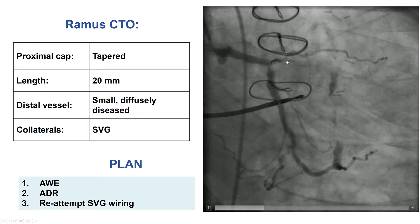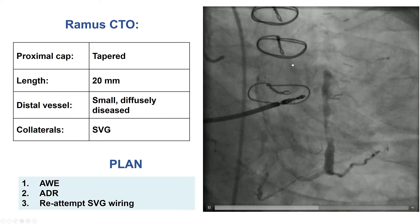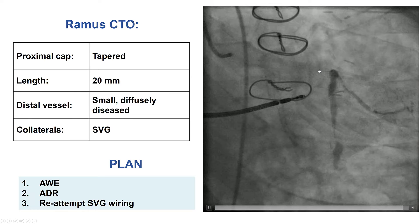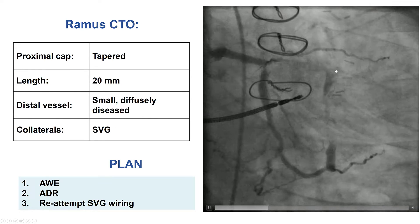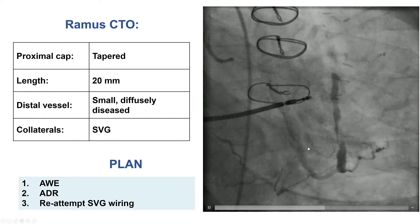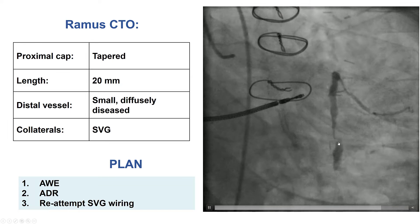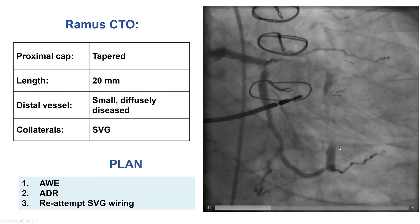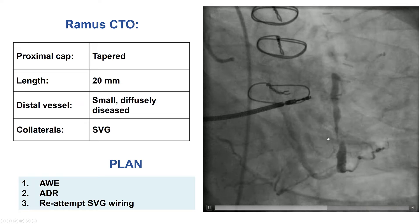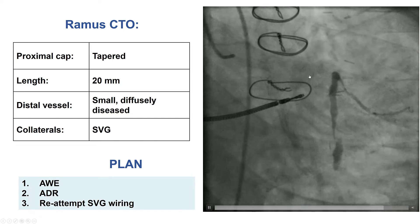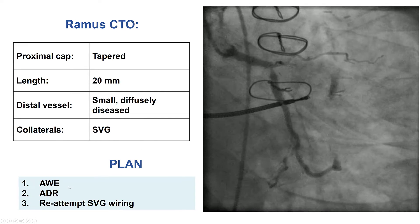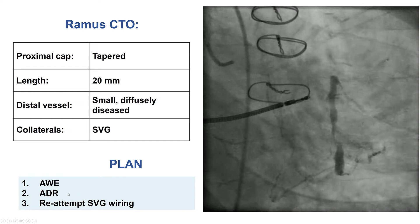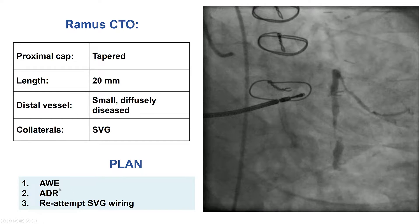This is a favorable CTO — it has a tapered proximal cap, the length is approximately 20 mm, and the distal vessel is a little diffusely diseased. One might potentially be able to go retrograde, but given the ST changes and chest discomfort we had before, that would be the last resort. The plan was to attempt antegrade wire escalation as the first strategy, with antegrade re-entry as the second strategy.